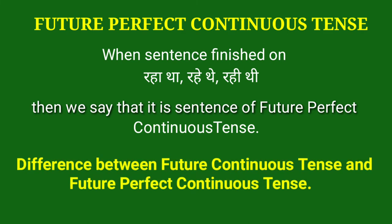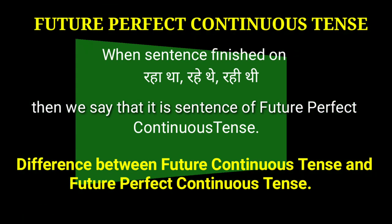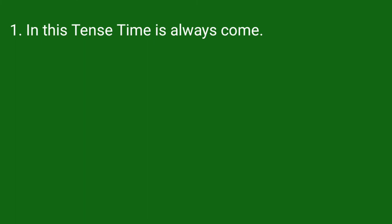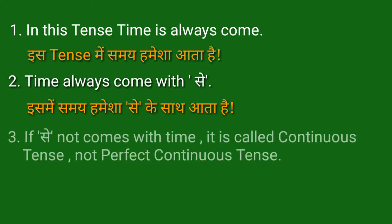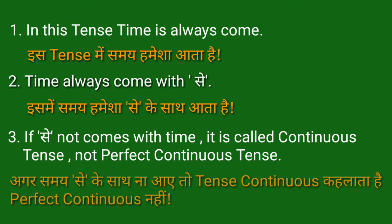Difference between Future Continuous Tense and Future Perfect Continuous Tense — future continuous tense और future perfect continuous tense में क्या अंतर है? In this tense, time always comes with 'since'. इस tense में समय हमेशा 'since' के साथ आता है। If 'since' does not come with time, it is called continuous tense, not perfect continuous tense. अगर समय 'since' के साथ न आए, तो tense continuous कहलाता है, perfect continuous नहीं।